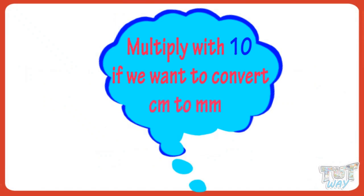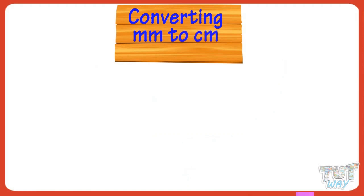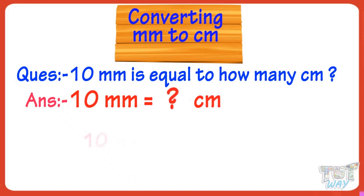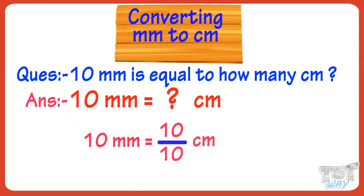Now let's learn converting millimeters to centimeters. 10 millimeters is equal to how many centimeters? 10 millimeters equals 10 divided by 10 centimeters. 10 divided by 10, we get 1. So 10 millimeters equals 1 centimeter.